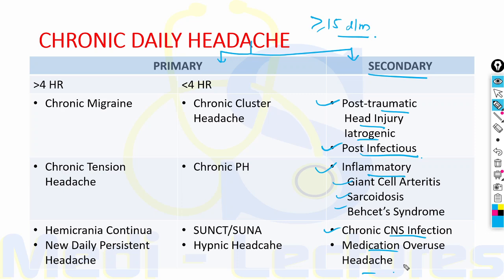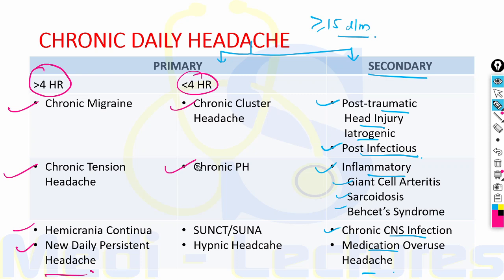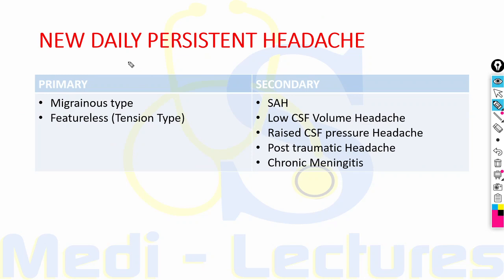For primary causes of chronic daily headache: if lasting more than 4 hours per day — chronic migraine, chronic tension headache, hemicrania continua or new daily persistent headache. If lasting less than 4 hours — chronic cluster headache, chronic paroxysmal hemicrania, SUNCT/SUNA or hypnic headache. So three of the four TACs are in the less-than-4-hours group: cluster headache, paroxysmal hemicrania, SUNCT/SUNA; hemicrania continua is in the more-than-4-hours group.